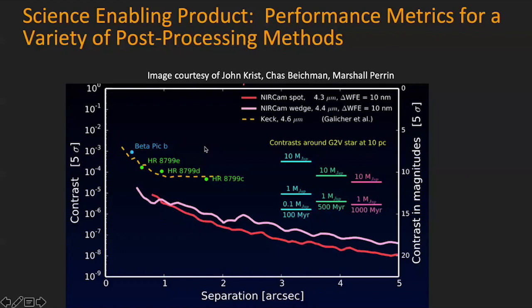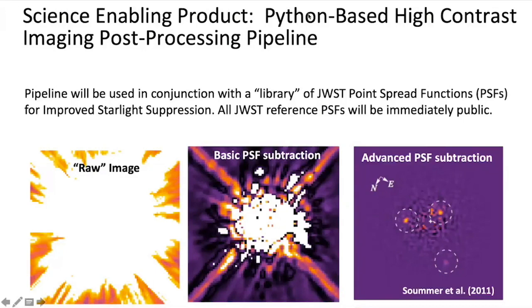We're going to be delivering clear performance metrics using a variety of post-processing methods, basically telling the community how well JWST is doing in terms of reaching contrast compared to what we expected. We're also going to be delivering a Python-based high-contrast imaging post-processing pipeline, to be used in conjunction with a library of JWST point spread functions to improve starlight suppression. Remy Soummer and others at Space Telescope have demonstrated the advantage of using a library of reference PSFs to improve subtraction of residual scattered starlight, and his team was even able to uncover extrasolar planets from 1998 hiding in the HST archives. We hope to do this with JWST.